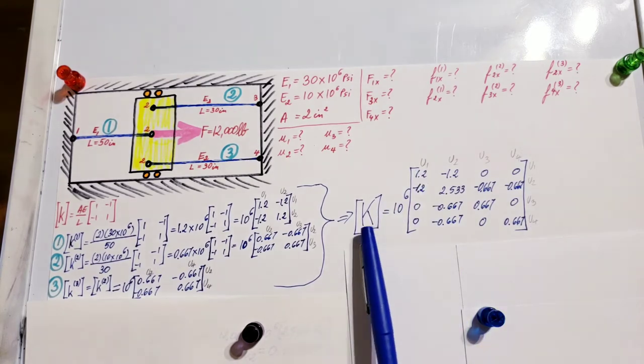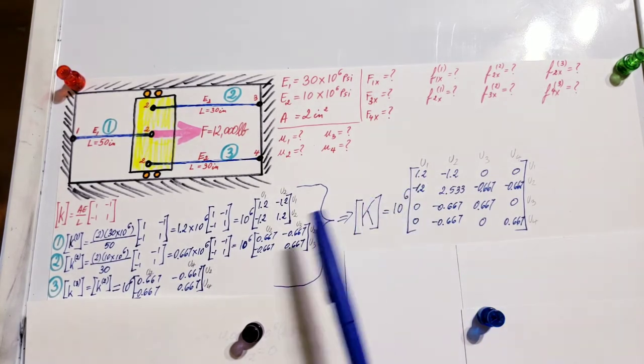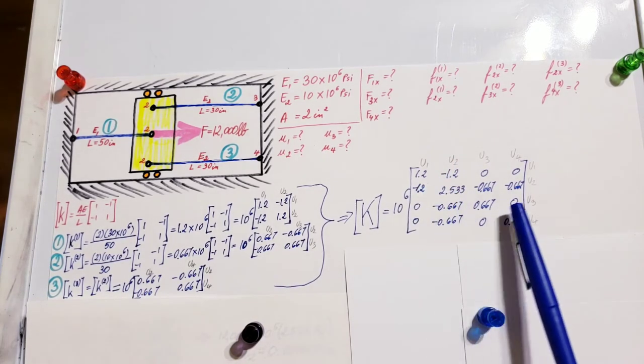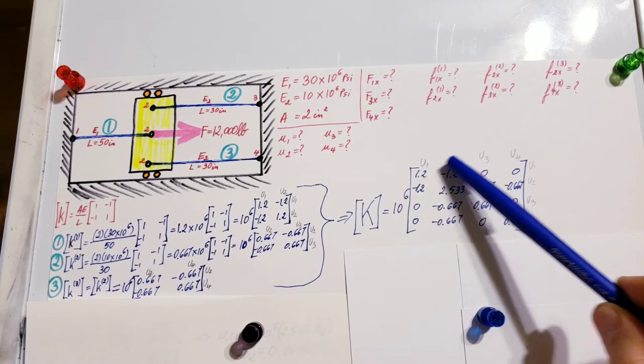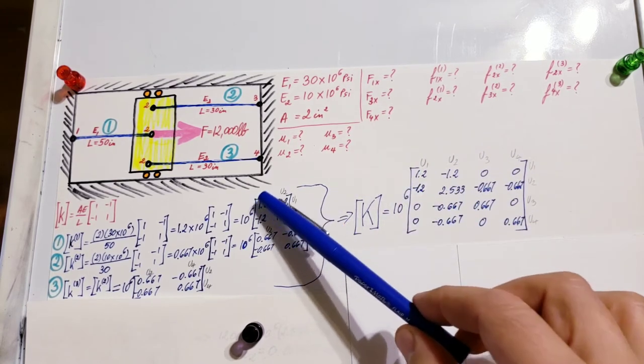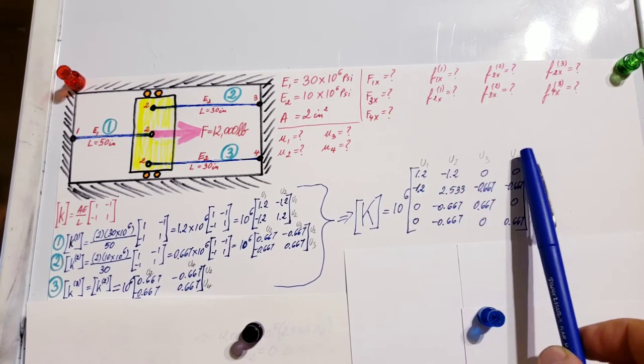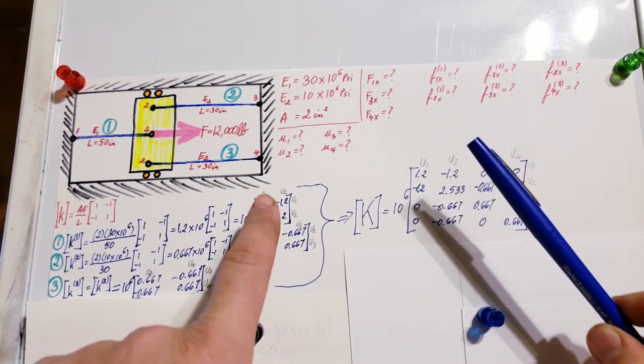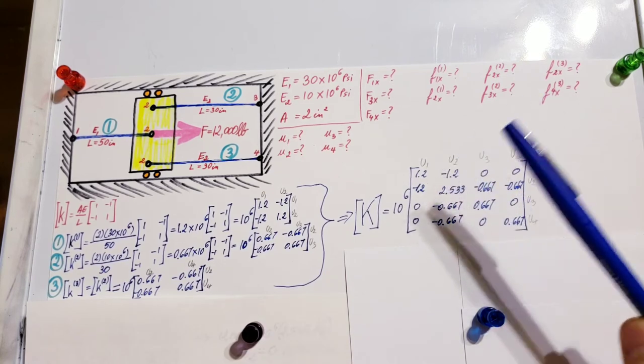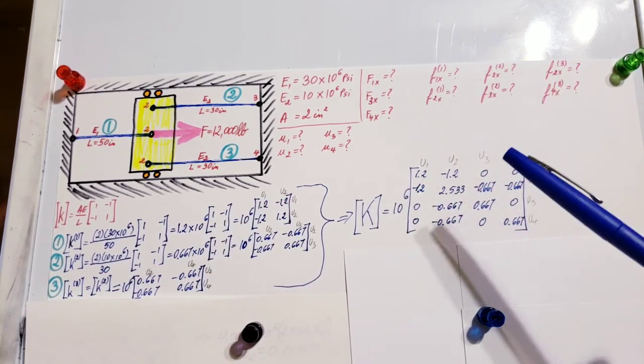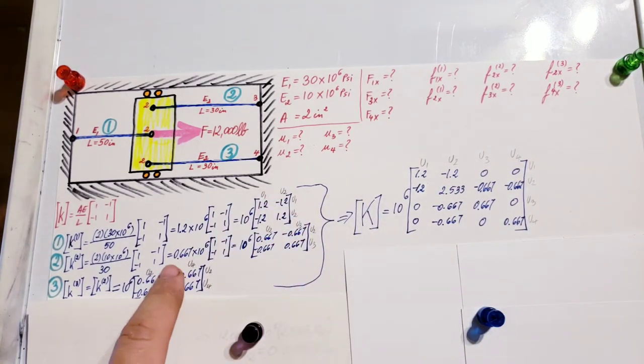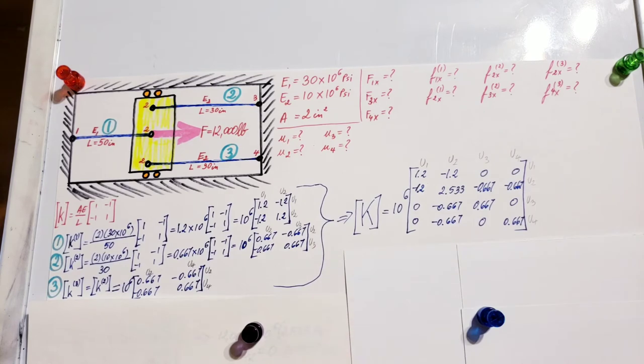Here's my global stiffness matrix: 10^6 as we factored it out from all three, and all the values filled out. On top and on the side I have the displacement information at u1, u2, u3, u4. This way when I'm transferring information from here into here, it's much easier to keep track of. If you don't know how to transfer this into the global stiffness matrix, check earlier videos in this playlist. Here I'm just going to focus on the process itself.